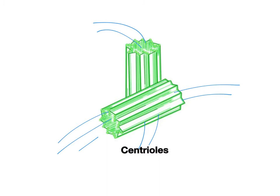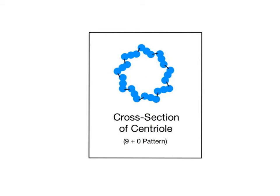The spindle is the complete microtubule structure that helps separate the chromosomes during cell division. Its shape resembles a top or an American football, having more narrow tapered ends and a wider, thicker middle region. The centrioles consist of triplets of microtubules, with nine triplets arranged in a cylinder with none in the center, called the 9+0 pattern, as seen in this cross-section. All of the microtubules in the centrioles are linked together by proteins, so they form a strong, condensed structure that can help grow and assemble the microtubules into the spindle fibers.